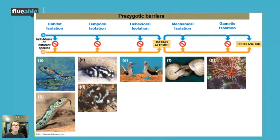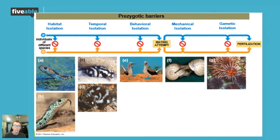Next is behavioral isolation — a personal favorite. This has to do with courtship rituals, commonly seen in birds. Birds have a special song or dance they do for mating, and each species has a separate song or dance that attracts their specific mates. Different mating calls and dances help ensure that birds of the same species mate with each other rather than with birds of a different species. These three barriers — habitat, temporal, and behavioral — all happen before organisms can even attempt to mate.